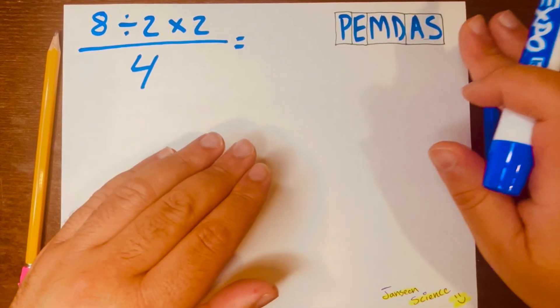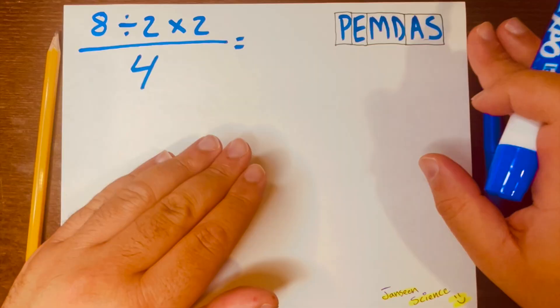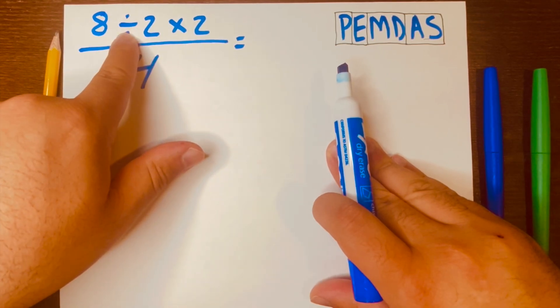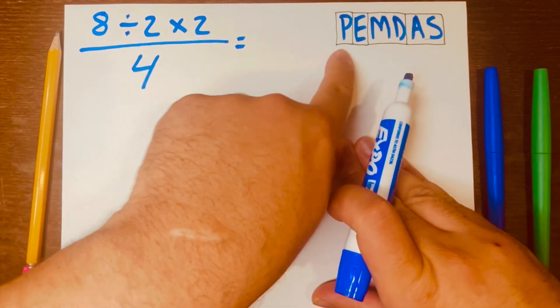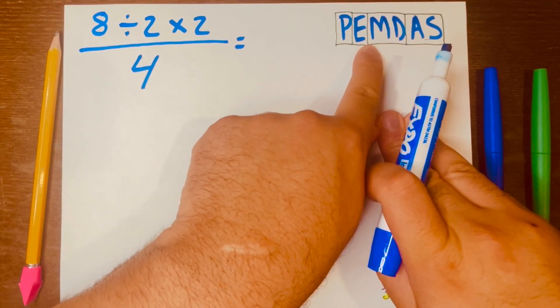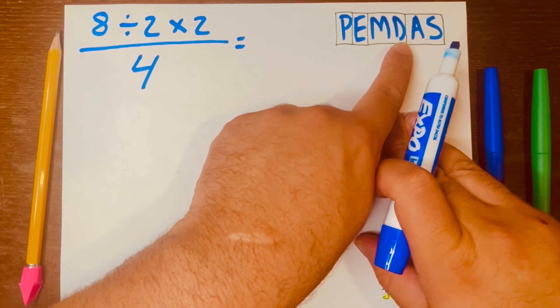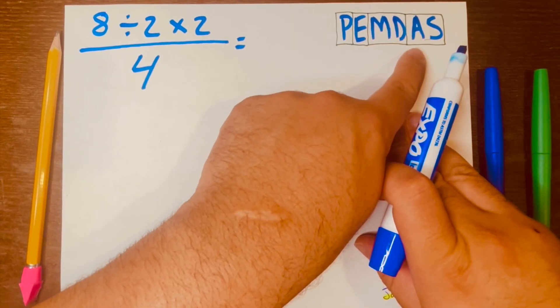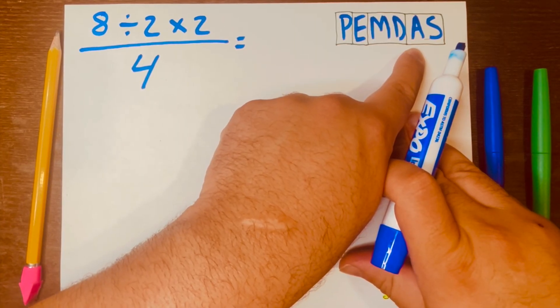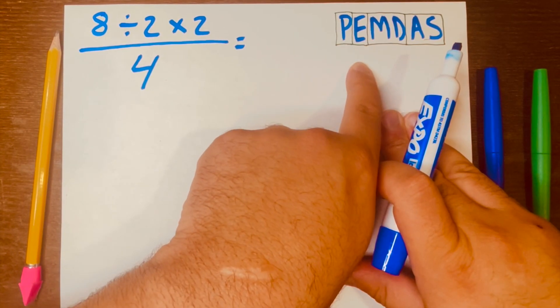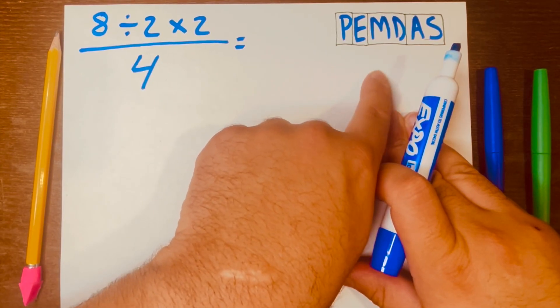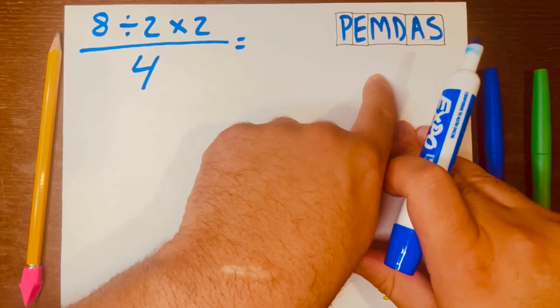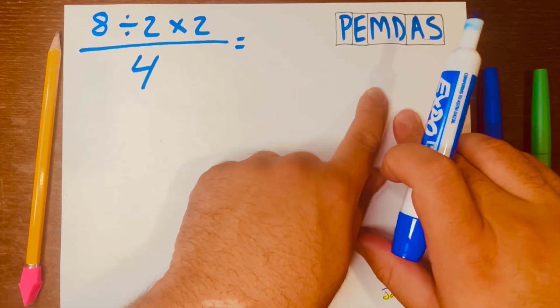So, some may have this idea that if you look at this problem and you see this acronym, and you see that M goes before D, that we start with M, multiplying. Remember, P is the highest level, AS is the lowest level. And some will follow these PEMDAS letters in a straight order like M first, then D second, or A first and S second. No.